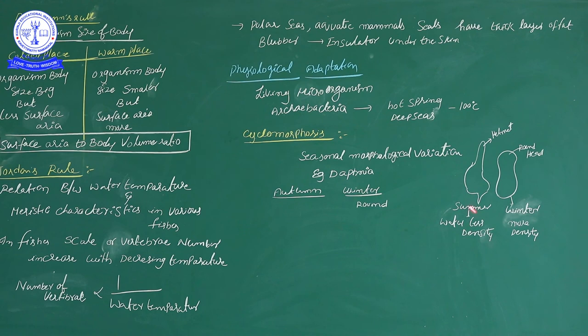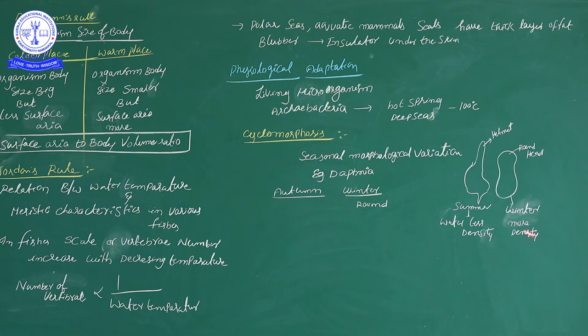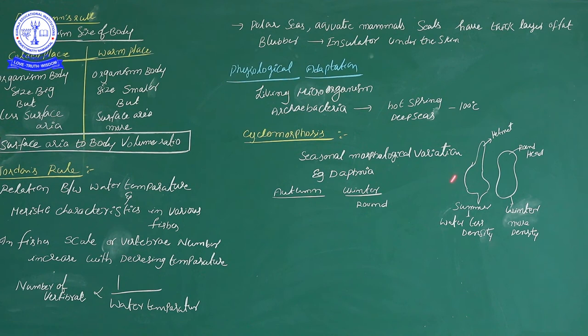What is the reason for cyclomorphosis? In summer, water has very less density. In less density, if an organism wants to float or swim, it needs more surface area — a big surface area. So to maintain this big surface area, the helmet forms on the head region. In winter, water has more density — easy to flow — so large surface area is not needed. The helmet disappears and the head becomes simply round in nature. That is why it is called cyclic morphosis — always changing from one stage to the other seasonally.